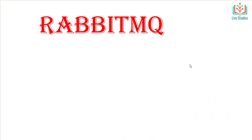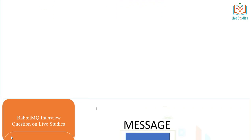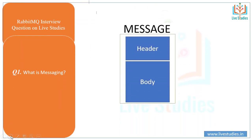My first question is: what is a message? In a message, there are two sections — first is the header and second is the body. In definition, messaging is a communication mechanism used for system interactions in software development. Messaging enables distributed communication that is loosely coupled. A message client can send and receive messages from any other client.